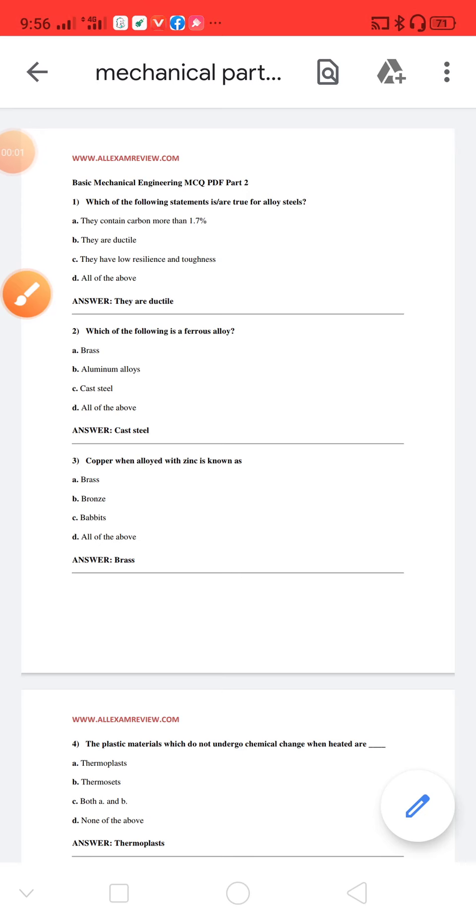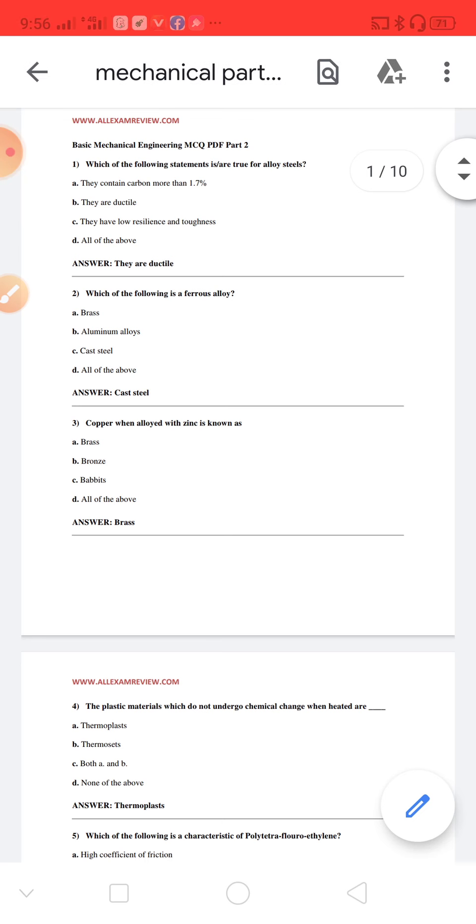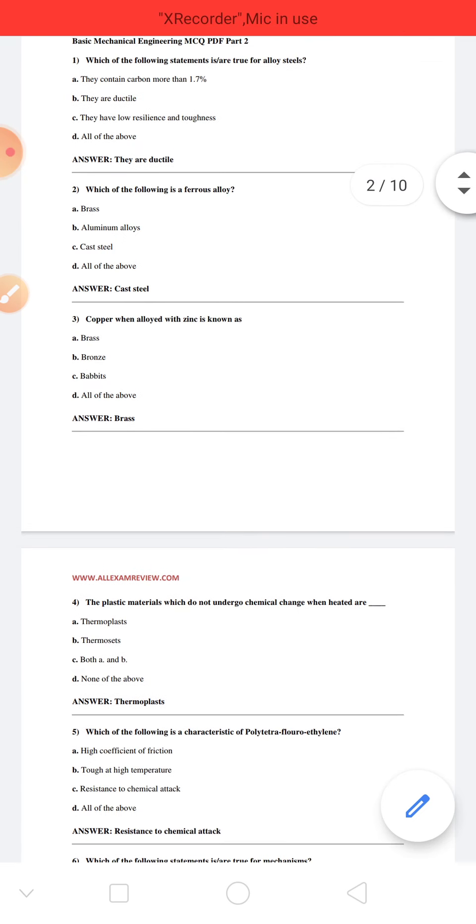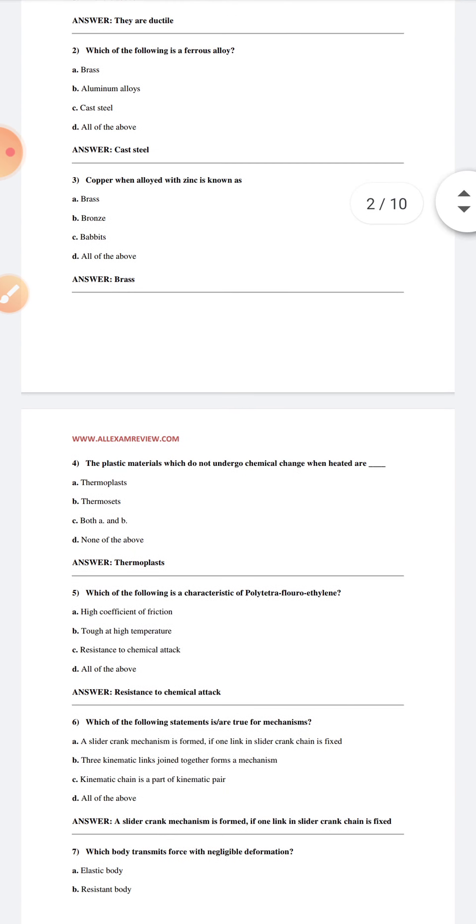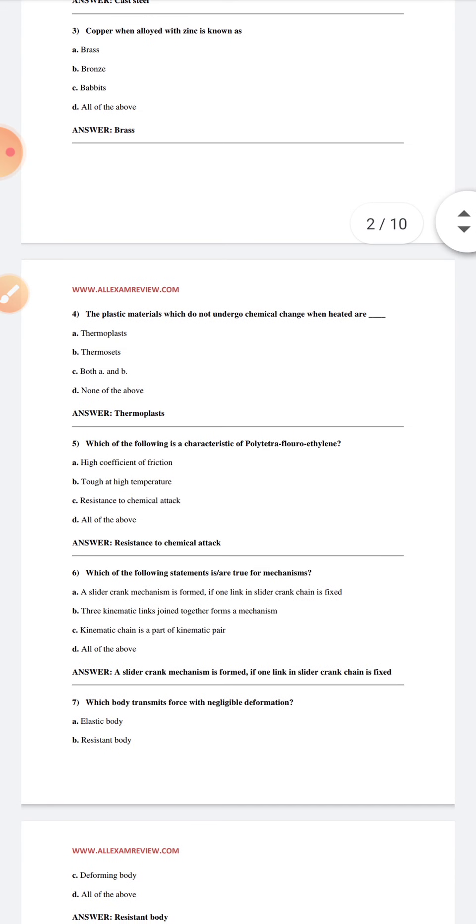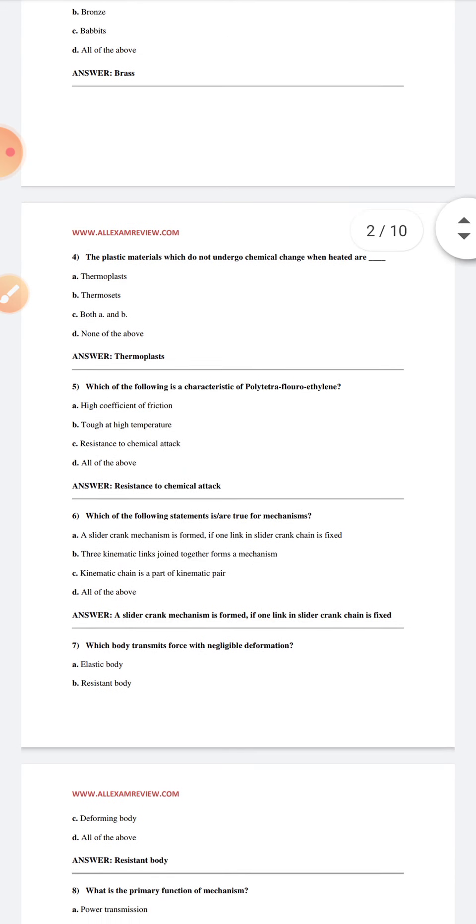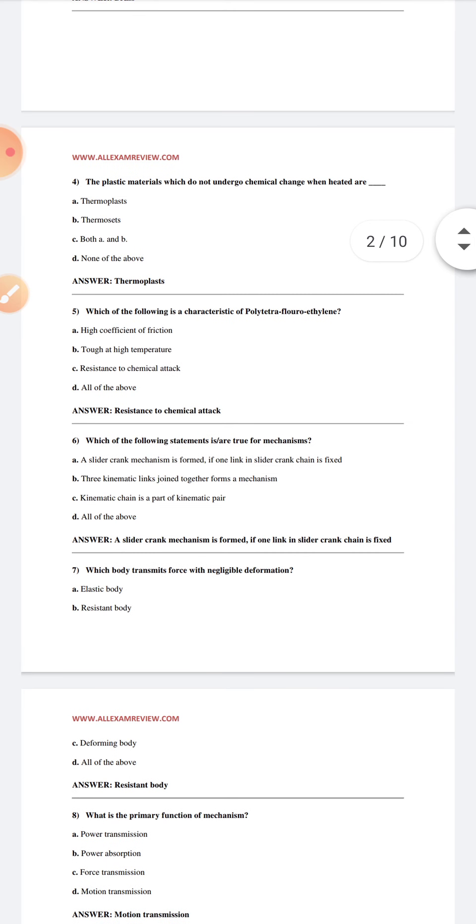Which of the following statement is true for alloy steel? They are ductile. Which of the following is a ferrous alloy? Cast steel. Copper when alloyed with zinc is known as brass. The plastic materials which do not undergo chemical change when heated are thermoplastics. Which of the following is a characteristic of polytetrafluoroethylene? Resistance to chemical attack.